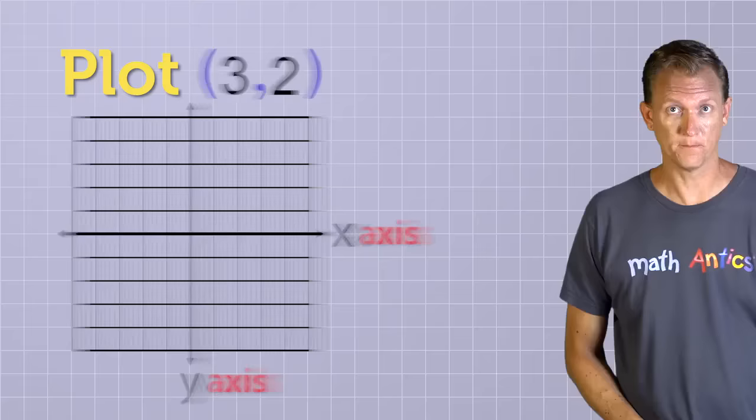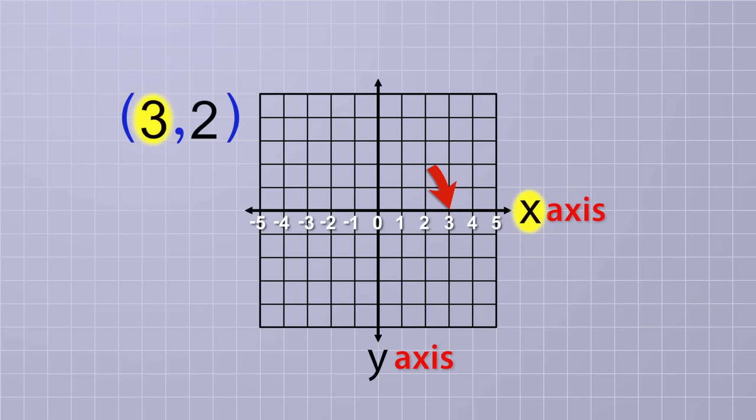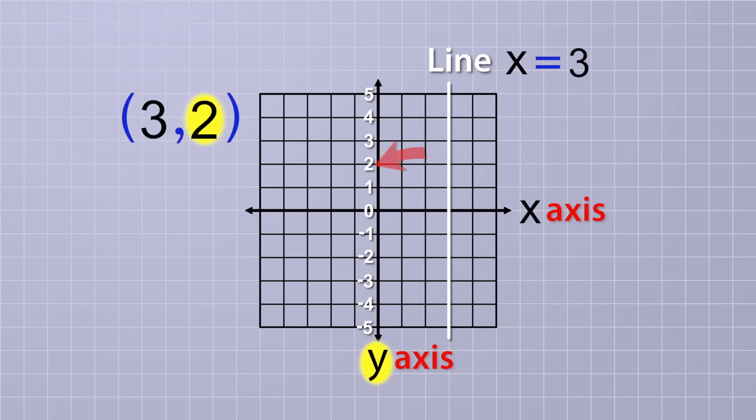To see how this works, let's plot the coordinates (3, 2). First, we locate the x value along the x-axis which is at 3 in this case. But instead of putting a point there, we draw, or just imagine, a line perpendicular to the x-axis that goes through the 3. We do that because the first number in the ordered pair only tells us where along the x-axis the point is, but it could be anywhere along the y-axis. We won't know that until we plot the second number. So temporarily, we just draw a line there to represent every possible point that could have an x-value of 3.